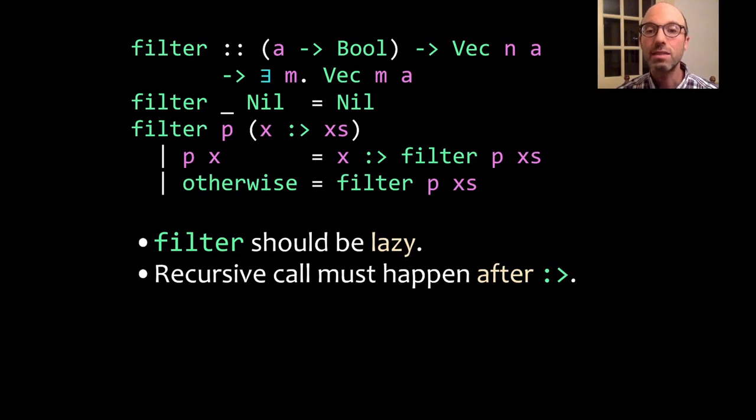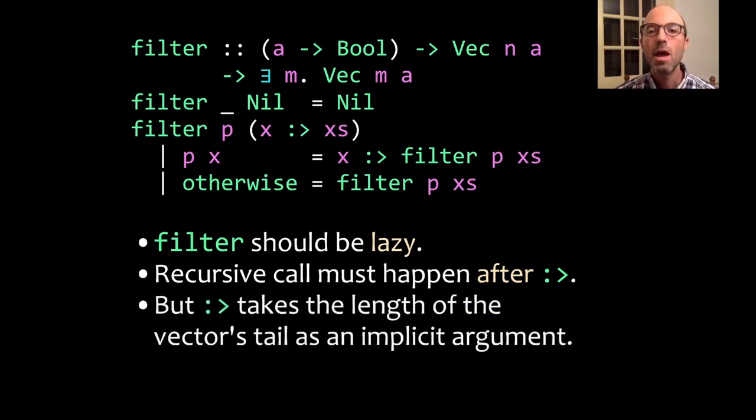One requirement for a lazy filter is that I can't pre-compute this recursive call. In this p x line, if this predicate p holds, I need to make this recursive call to filter, I don't want to make that recursive call until I've already set up the cons operator. But this cons operator takes a vector of length n and gives us back a vector of length suc n. So it takes, at compile time, the length of the tail.